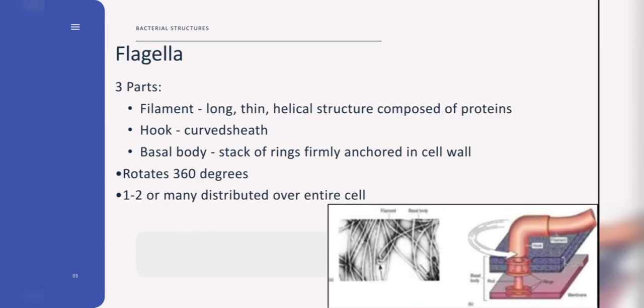Flagellum or flagella is primarily a motility organelle that enables movement and chemotaxis. Bacteria can have one flagellum or several and they can be either polar, one or several flagella at one spot, or peritrichous, several flagella all over the bacterium. And flagella has three parts: the filament, hook, and basal body. Filaments are long, thin, helical structures composed of proteins. Hook is a curved sheath. And basal bodies are stacks of rings firmly anchored in the cell wall.